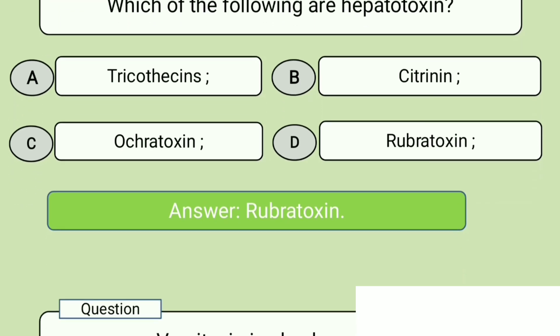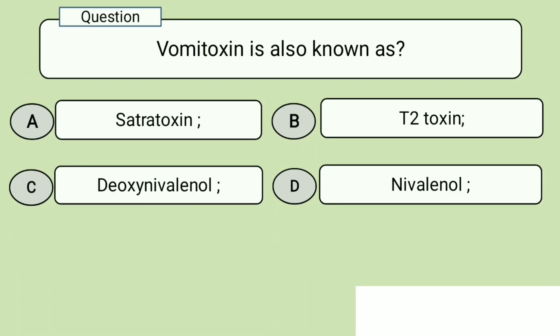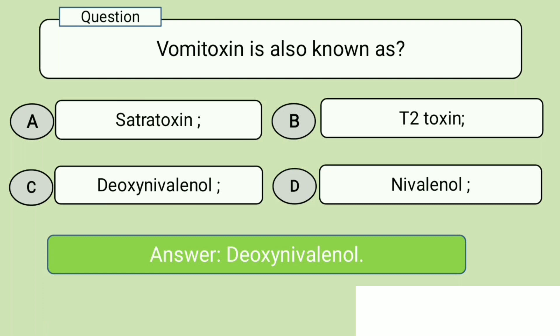Question 4. Vomitoxin is also known as. A. Satratoxin, B. T2-toxin, C. Deoxynivalenol, D. Nivalenol. Answer: Deoxynivalenol.